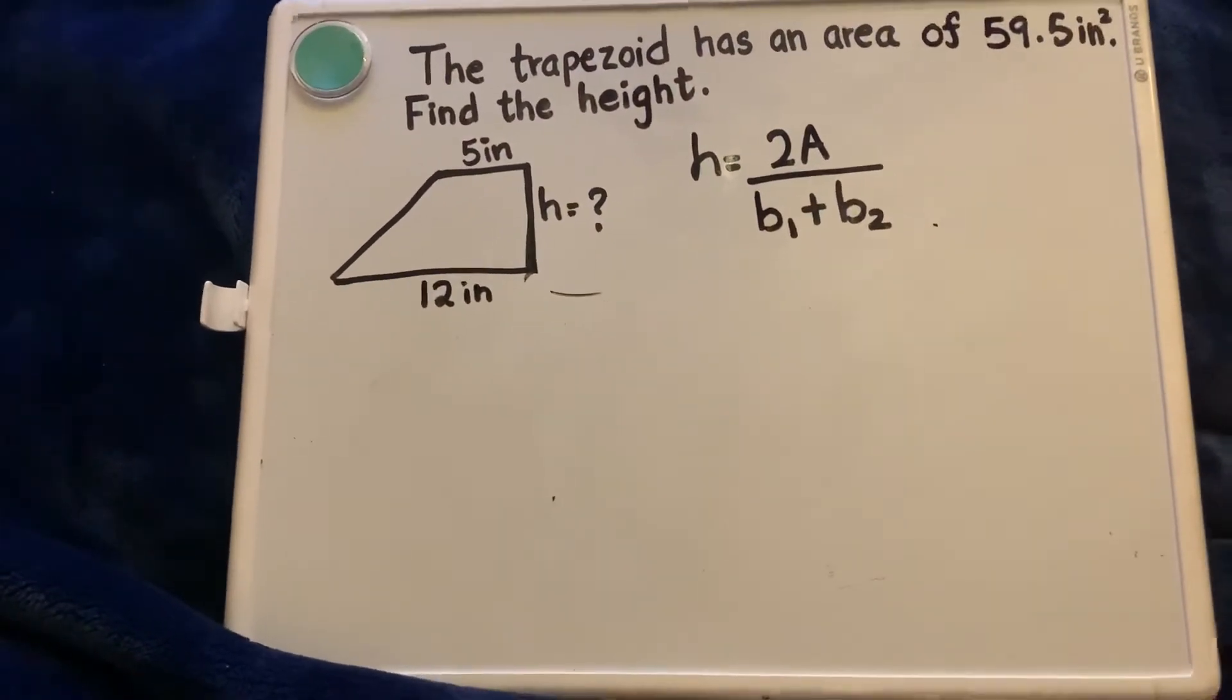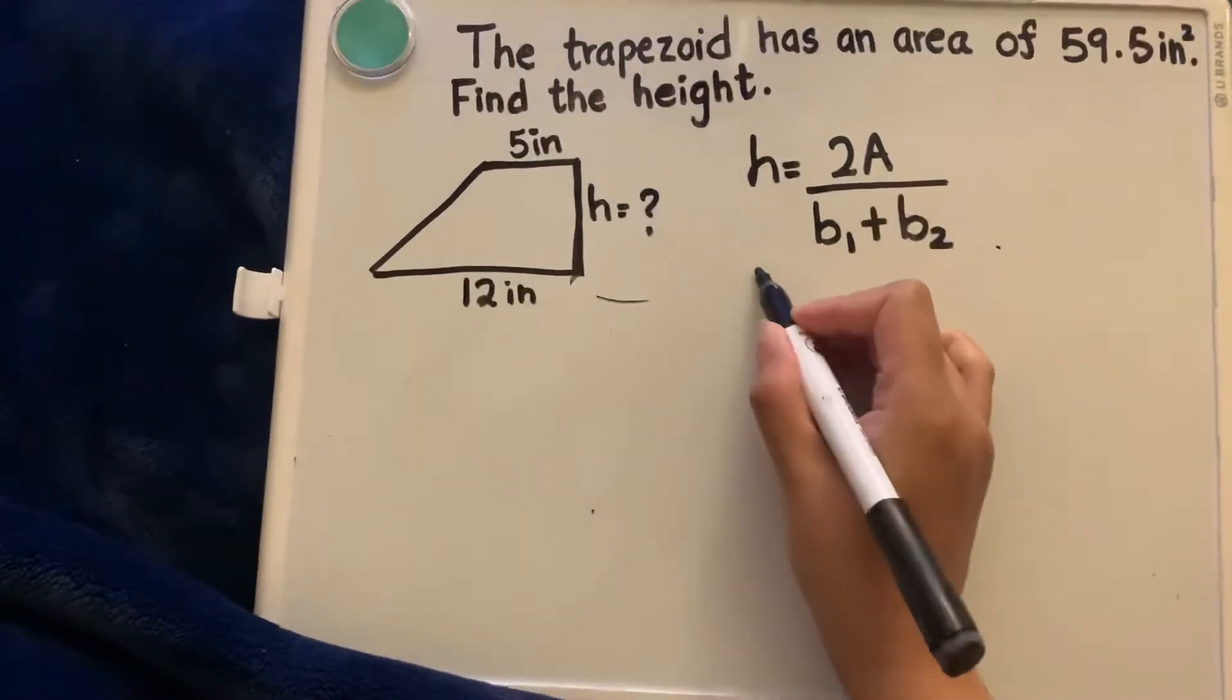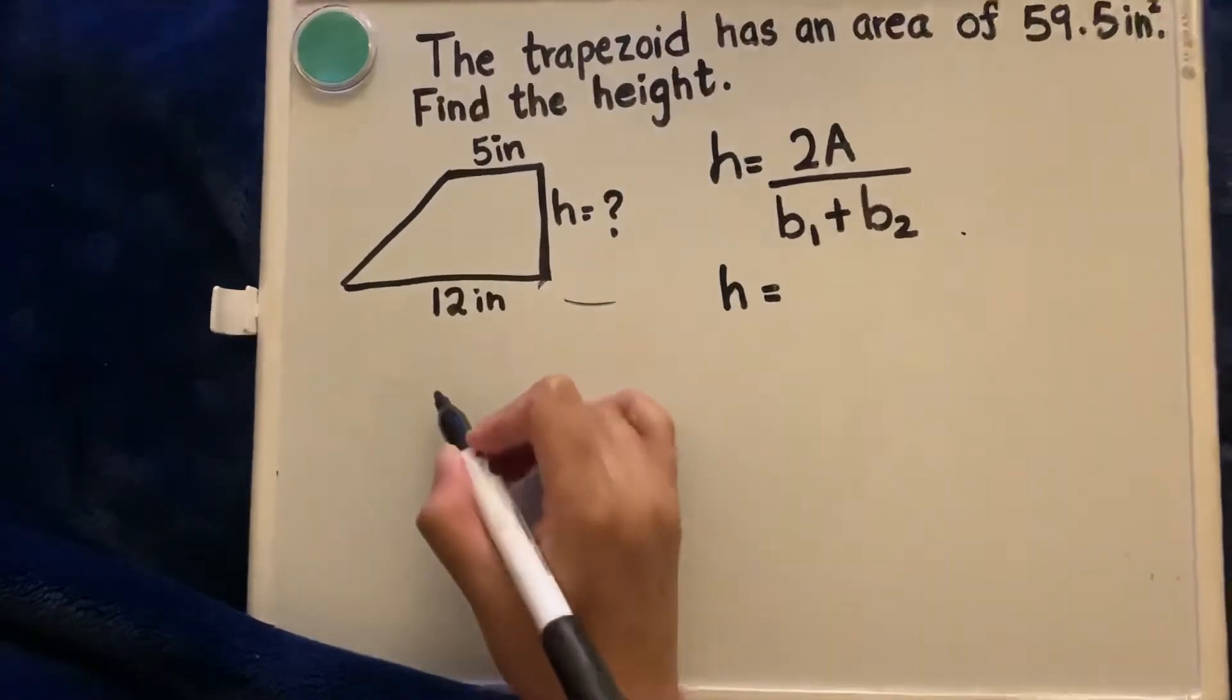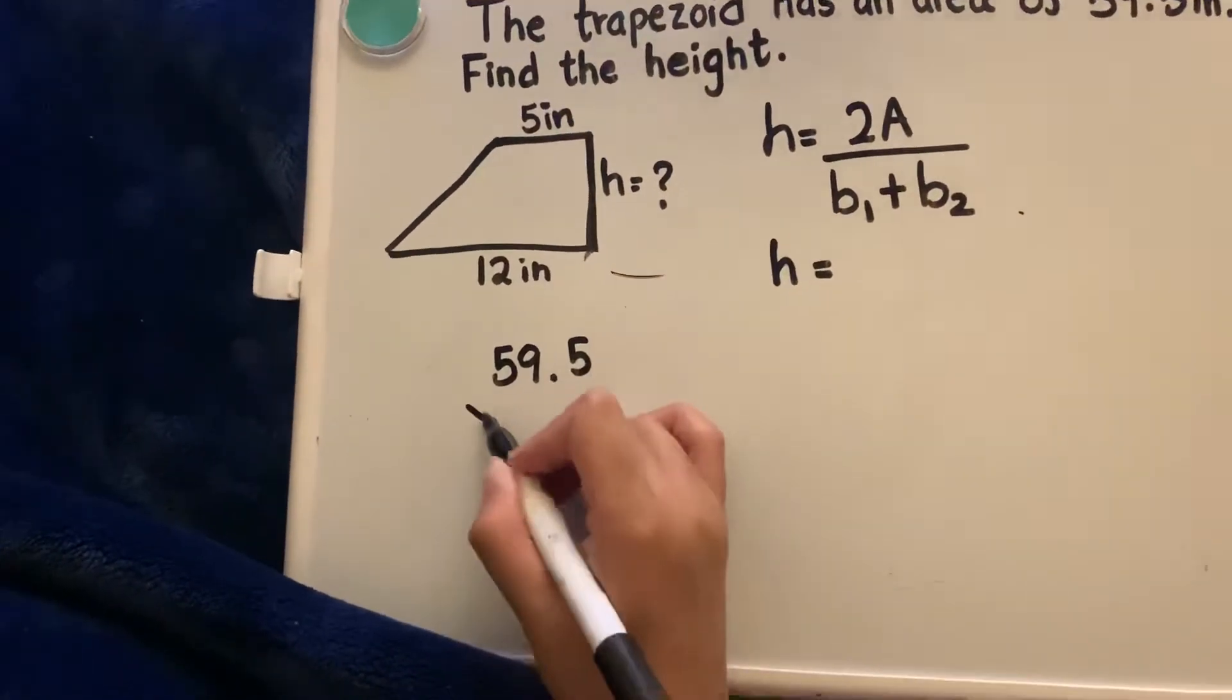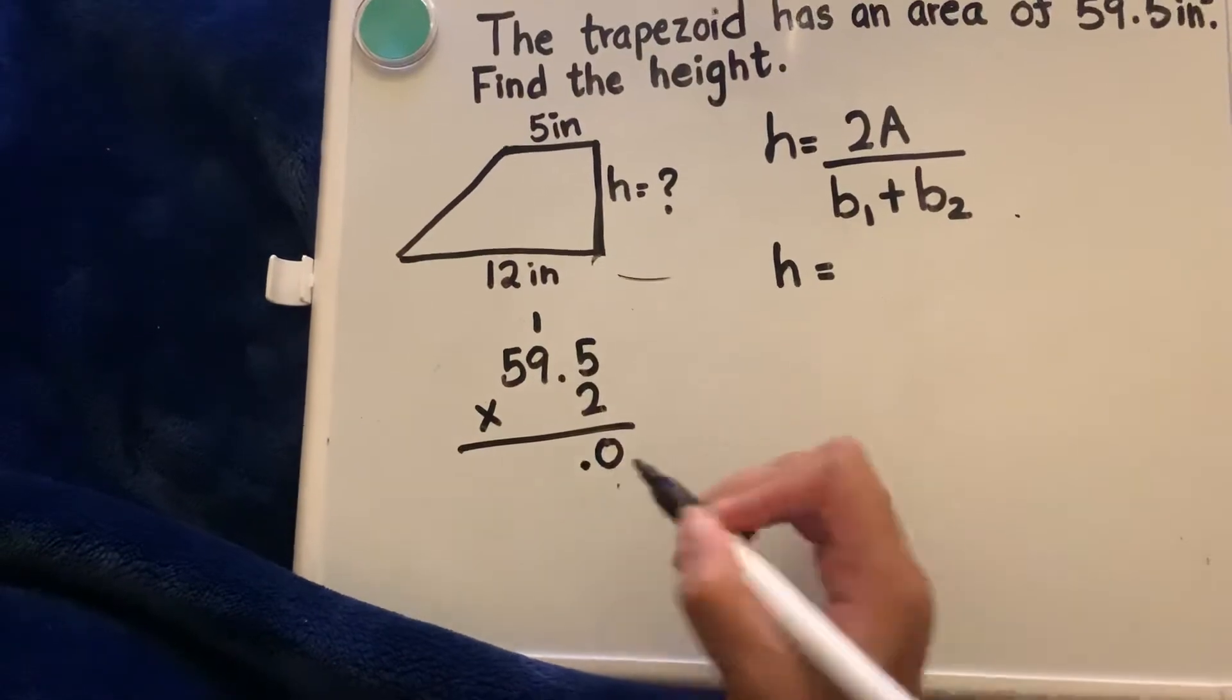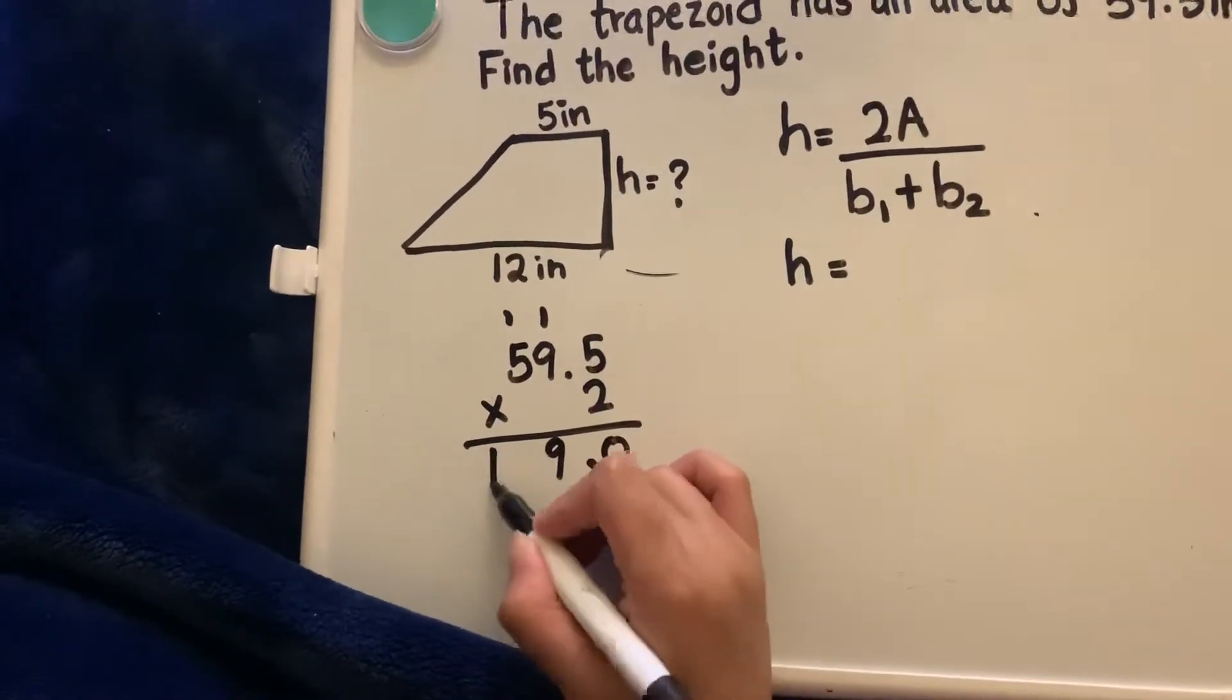First step is to substitute in the values that we do know. In this case, height is what we are looking for so we don't really fill that in. 2 times A, we have to multiply 59.5 by 2. I will be doing it right here. 2 times 5 is 10, carry the 1. 2 times 9 is 18 plus 1 is 19. 2 times 5 is 10, 10 plus 1 is 11.